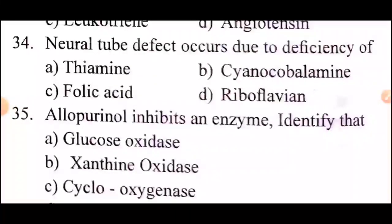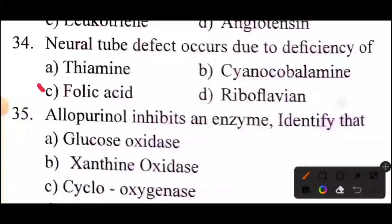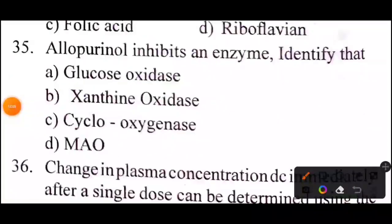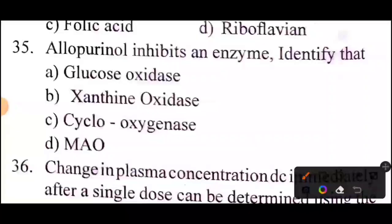Question: neural tube defects occur due to deficiency of? Answer: option C, folic acid.